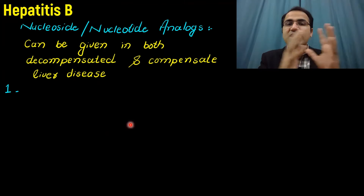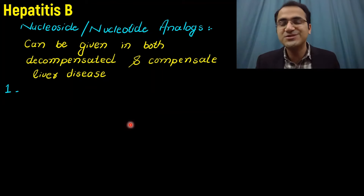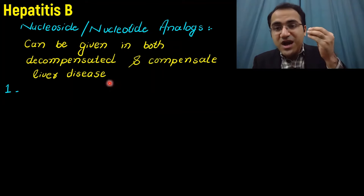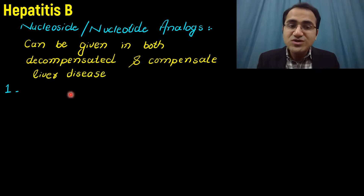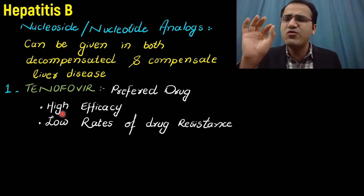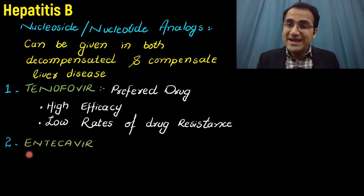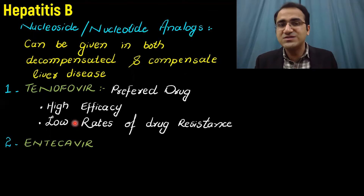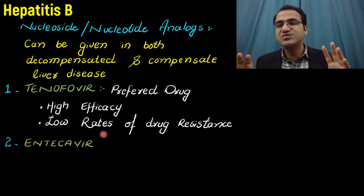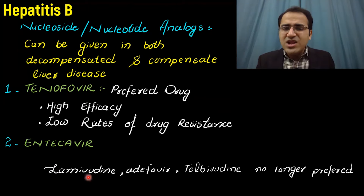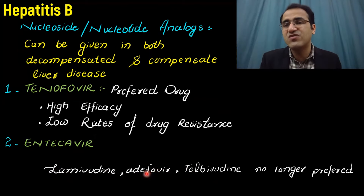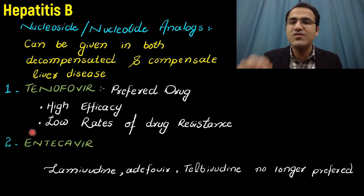Nucleotide and nucleoside analogues are also used in chronic hepatitis B treatment and can be given in both compensated and decompensated liver disease, unlike interferon alpha. Tenofovir is the preferred drug due to higher efficacy and lower rate of drug resistance. Entecavir is also a very effective drug. These analogues stop DNA replication of hepatitis B virus, thereby inhibiting viral proliferation. Lamivudine, adefovir, and telbivudine are no longer preferred due to higher resistance rates and lower efficacy.